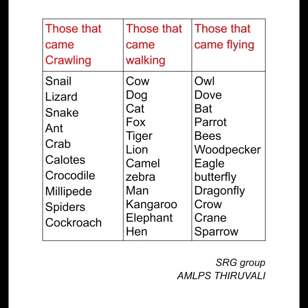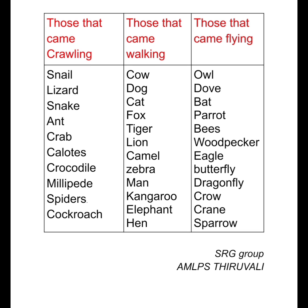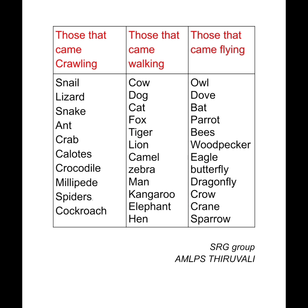Then those that came flying. Animals that fly include: Owl, Dove, Bat, Parrot, Bee, Bee-eater, Woodpecker, Eagle, Butterfly, Dragonfly, Crow, Crane, Sparrow.